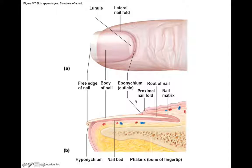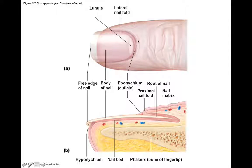This slide shows an image of a nail at the distal end of a finger or phalange. Here's the nail itself with the free edge, the body, and then the matrix — or the root of the nail — which is deeper. We have the lateral nail fold on the side and the eponychium, or cuticle, here on the proximal end.